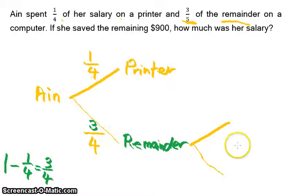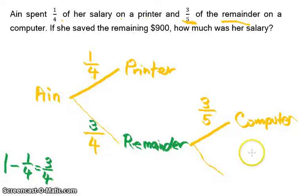She spent three-fifths of the remainder on a computer, so we write computer. She spent three-fifths of the remainder on a computer, so she has a new remainder here.